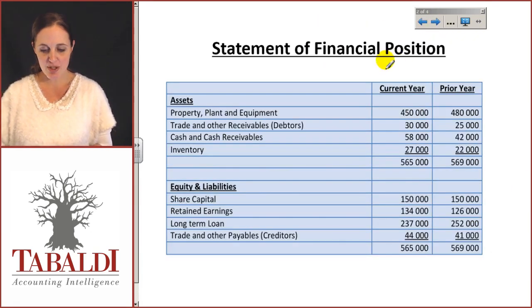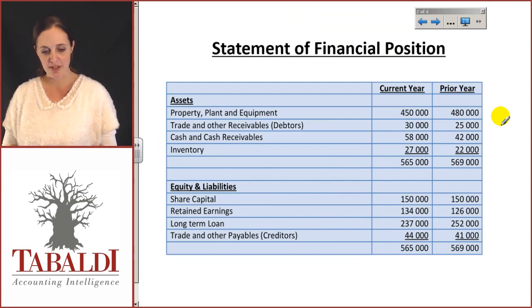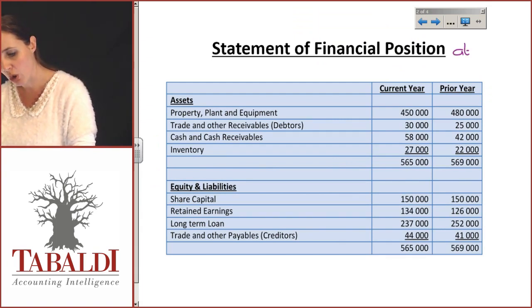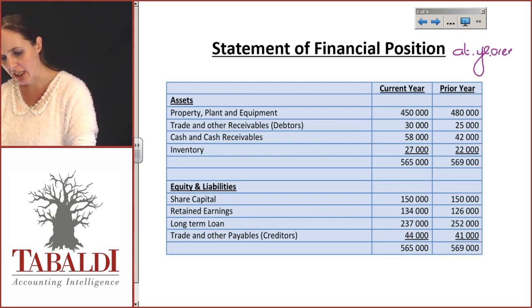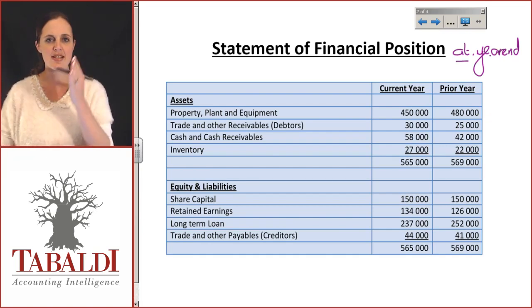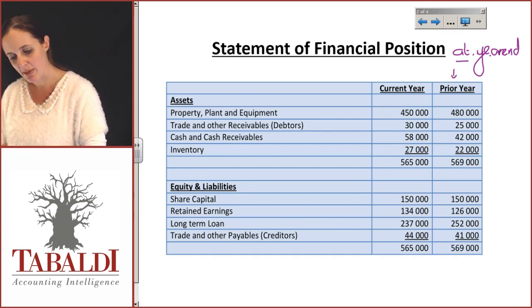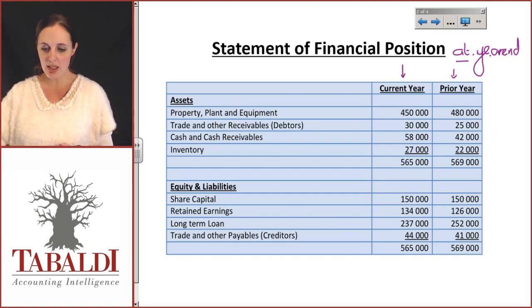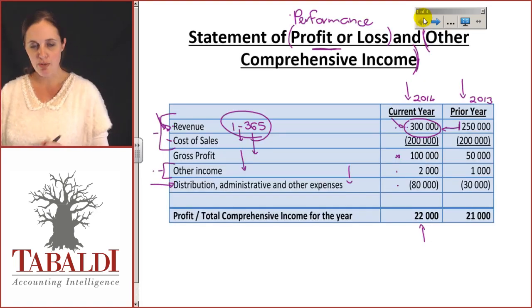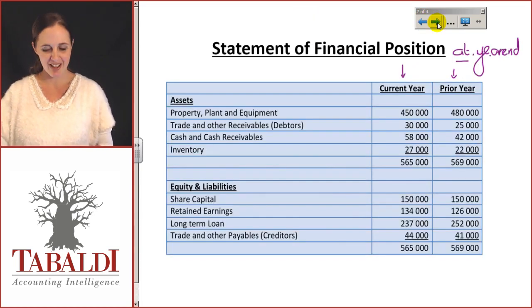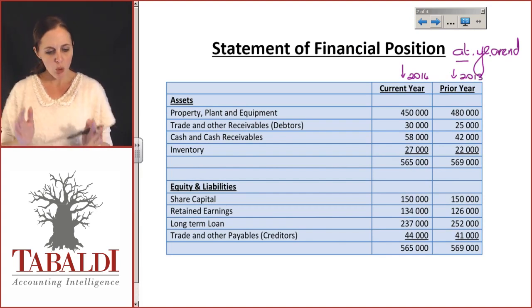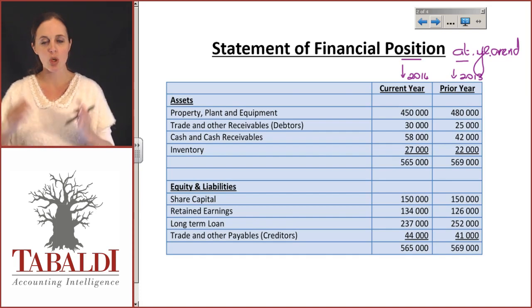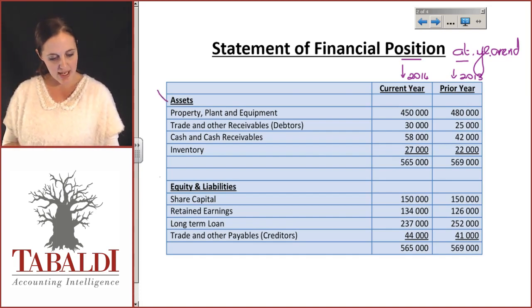When we take a look at the statement of financial position, this is completely different. Your statement of financial position we will always talk about at a specific date — at year end. We'll get into year end in unit two, but it's always a snapshot at a particular point in time. You'll note again that I'm still comparing information between current year and prior year — we generally give two years' information so we can compare, for example 2014 and 2013. We indicate your assets, your equity and your liabilities — we'll cover the detail of those in study unit two.